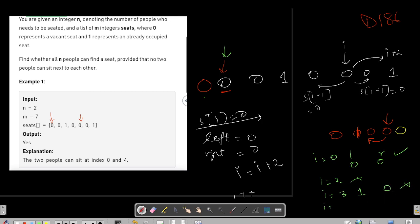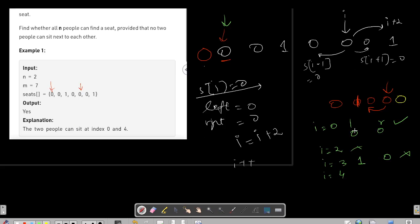Similarly, for i equals four, what will happen? The left value will be zero and the right value is also zero. You can place it here. The only thing that you care about is that left plus right should be equal to zero. That's it. So since we have placed it here, then we will jump by two index.